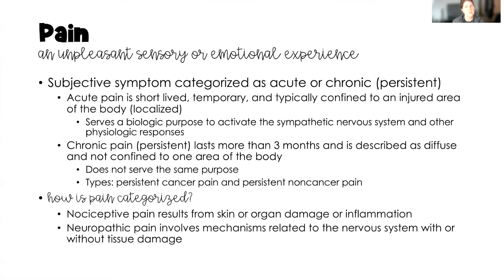With acute pain, things are going on in the body that tell us we are in pain, producing those acute clinical manifestations that can then be treated. Chronic pain, on the other hand — that persistent pain — lasts for more than three months and is often described as diffuse, meaning throughout the body, not necessarily confined to just one area like acute pain.